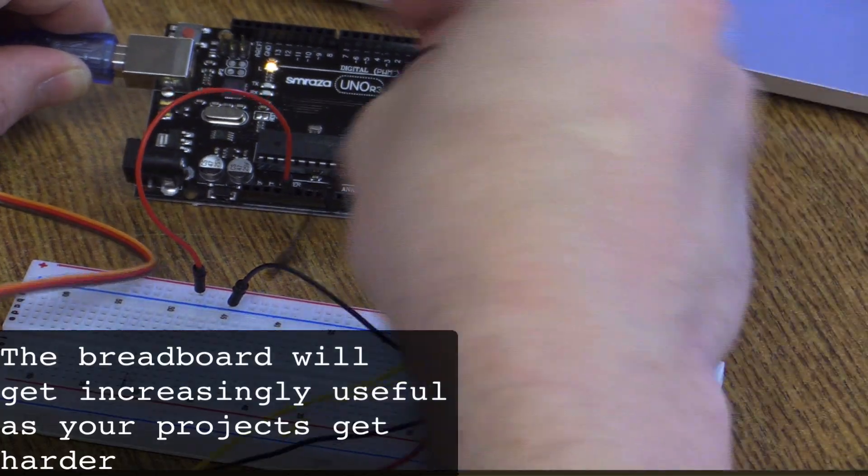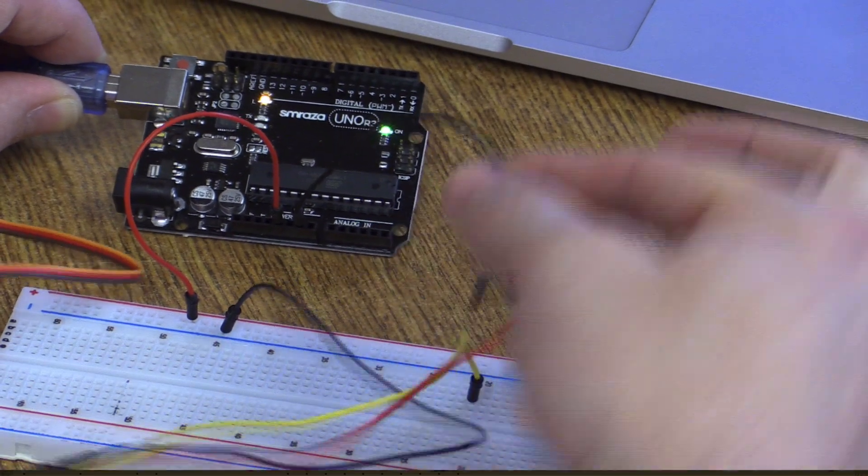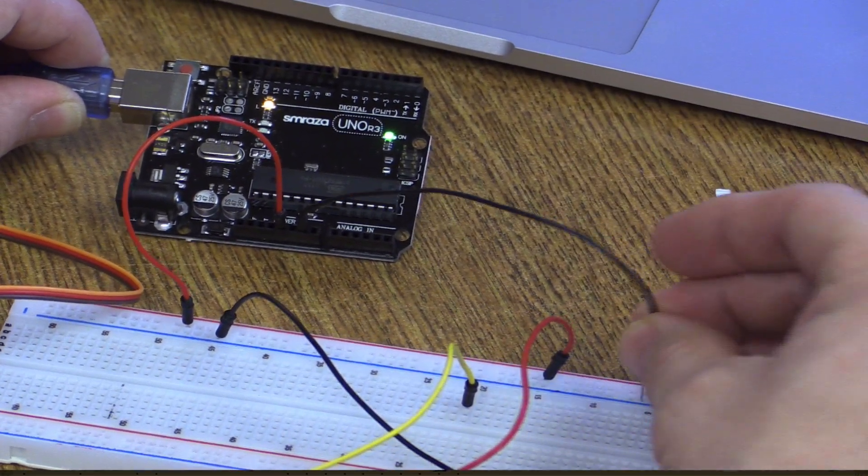Take the ground, GND, on the board, connect it to the negative line, it doesn't matter where it is.